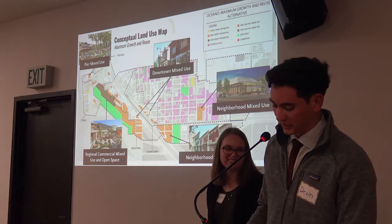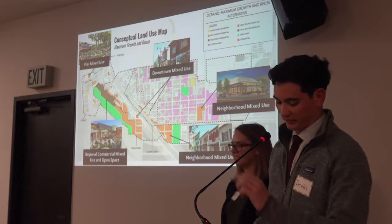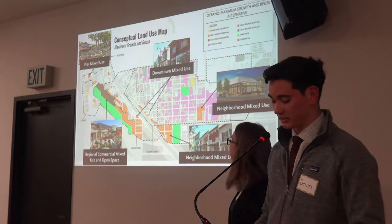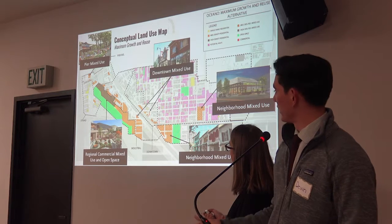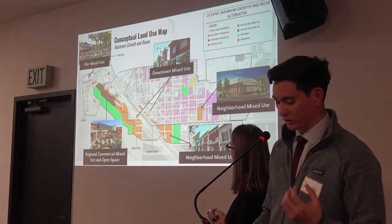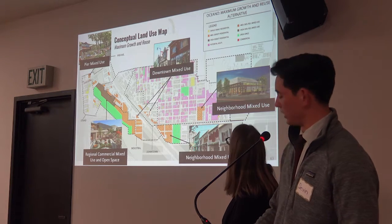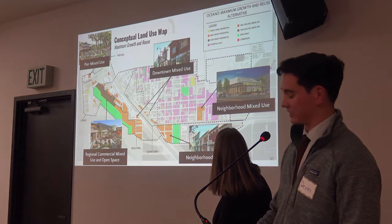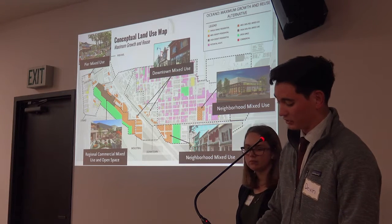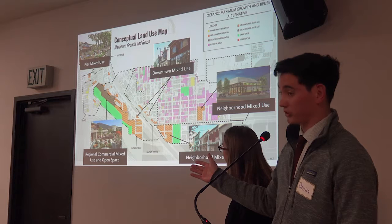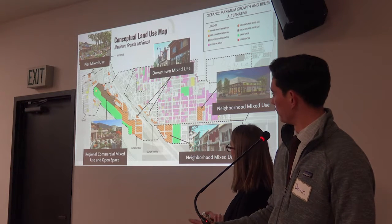This map shows the proposed land uses for future development in the maximum growth and reuse alternative. Key changes include the redevelopment of Peer Avenue, the airport, and downtown neighborhoods, through an emphasis on medium and high-density residential and mixed-use developments, with large areas set aside for community open space. Since development is concentrated along an area historically prone to flooding, it includes a protective dike along the Arroyo Grande Creek.